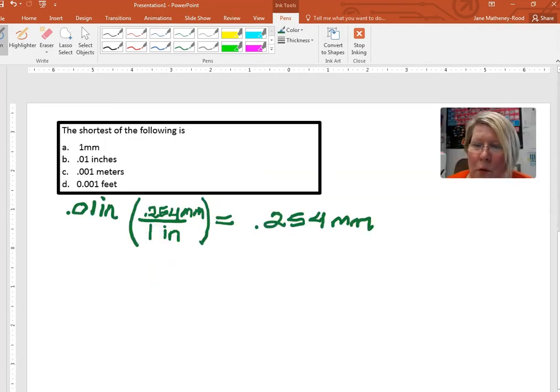The next problem we want to look at is to determine which of these four values is the shortest and the way that we're going to approach this is we're going to convert them all into millimeters so that we are not dealing with apples and oranges. We have to be in all the same units. We could just as easily convert everything into inches or meters or feet. I'm just picking millimeters.